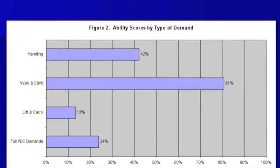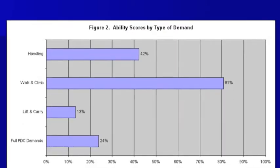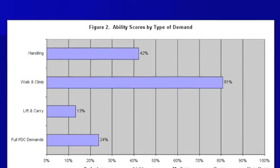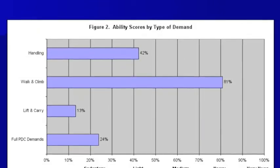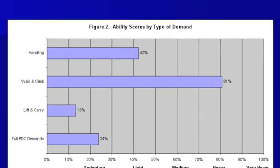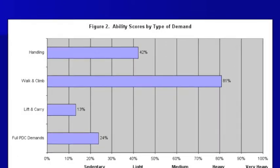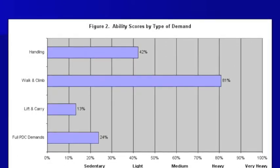Sophisticated analysis of the data is immediate and automatic and provides output in terms of the work demands that the person is capable of performing. There is a rating in terms of full physical demand characteristics of work and the three major factors that compose PDC level: handling, walking and climbing, and lifting and carrying.